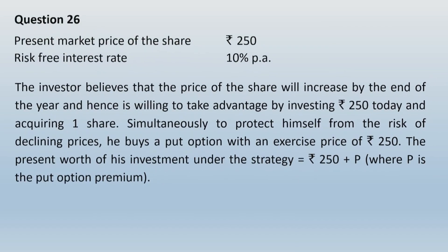Let us read the question. It says: present market price of the share is Rs 250, risk-free interest rate is 10% per annum. The investor believes that the price of the share will increase by end of the year, and hence is willing to invest Rs 250 today to acquire one share. Simultaneously, to protect himself from the risk of declining prices, he buys a put option at an exercise price of Rs 250. The present worth of his investment under this strategy equals Rs 250 plus P, where P is the put option premium.